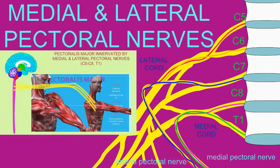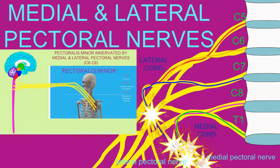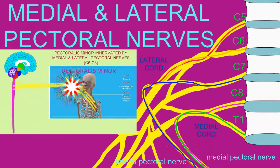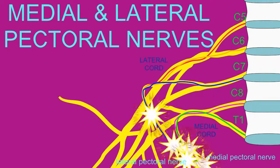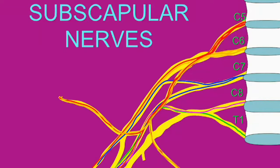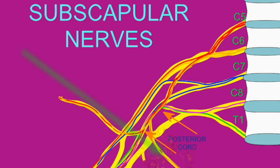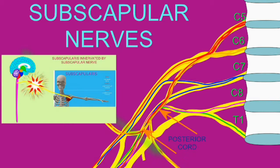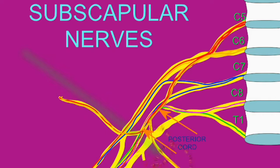The pectoral nerves innervate the pectoralis major and minor muscles. Ventral rami from spinal nerves C5 and C6 enter the posterior cord of the brachial plexus and form two subscapular nerves, which innervate the teres major and subscapularis muscles.